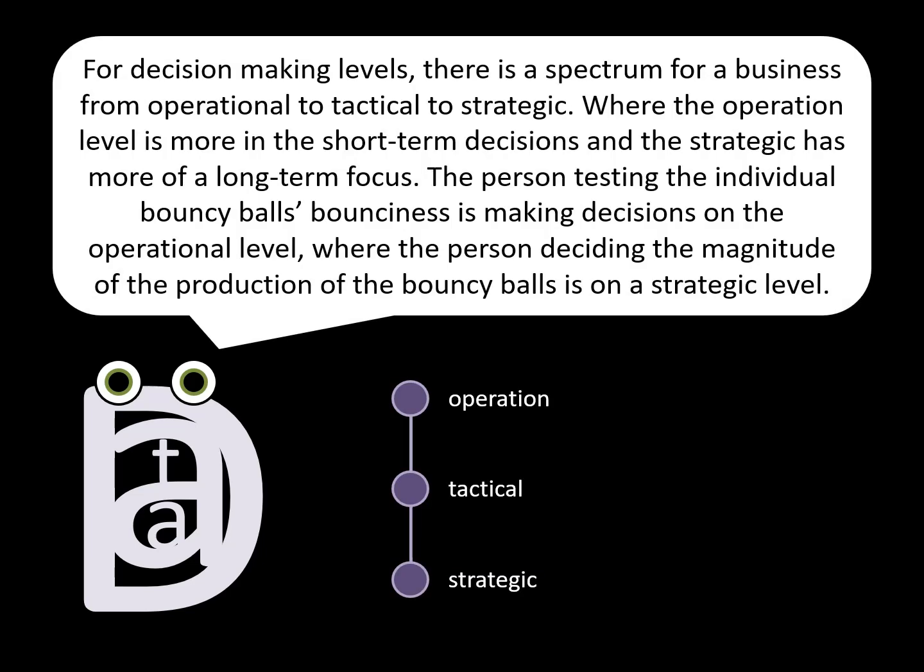For decision-making levels, there is a spectrum for a business from operational to tactical to strategic. The operational level is more focused on short-term decisions, while the strategic level has more of a long-term learning focus. For example, the person testing individual bouncy balls' bounciness is making decisions on the operational level, where the person deciding the magnitude of production of bouncy balls is on a strategic level.